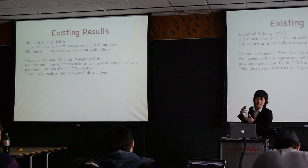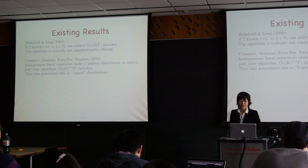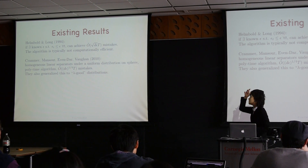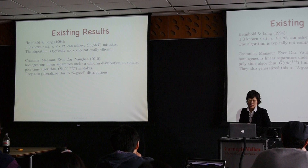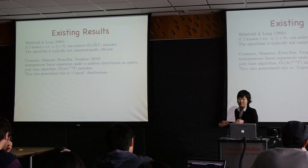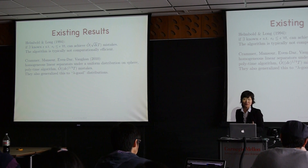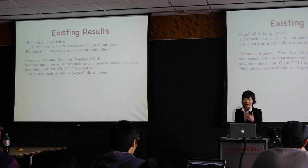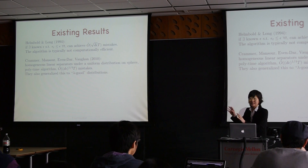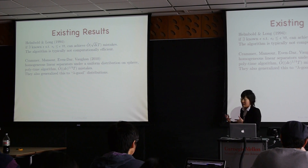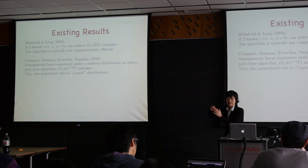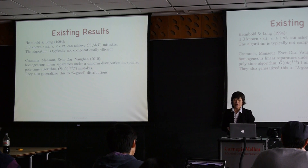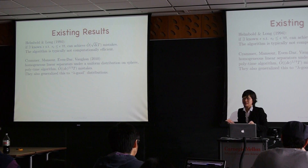They also generalize this to a family of distributions called lambda-good. Lambda-good distributions preserve some of the nice properties of the uniform distribution — specifically, this kind of distribution relates the angles of the linear separator to probabilities of disagreement.